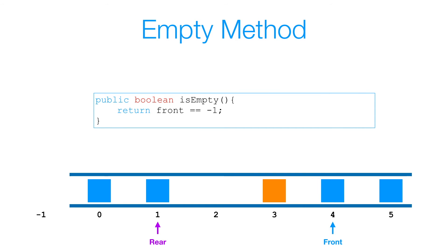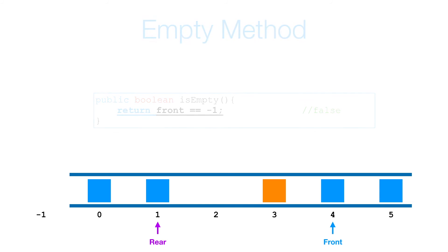Now let's look at the isEmpty method. Our isEmpty method is just as simple. All we have to do is check if our front is equal to negative 1, or our rear is equal to negative 1, because if our queue is empty, both front and rear will be set to negative 1. If front is not equal to negative 1, we simply return false.